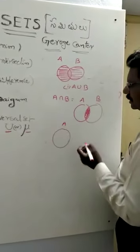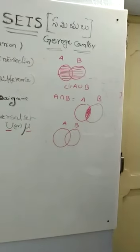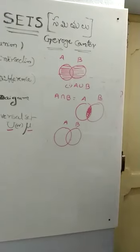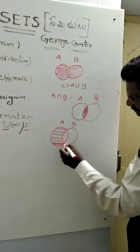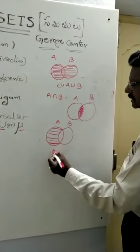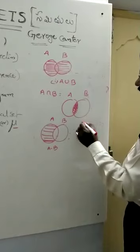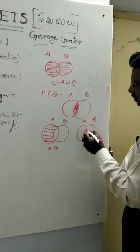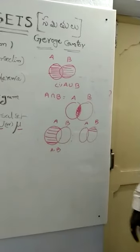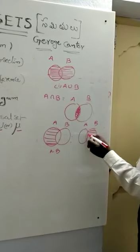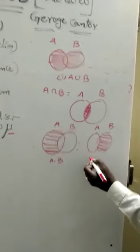Next, A minus B. This is called A, this is called B. A minus B means the remaining part of A only. This is called A minus B. Suppose B minus A, you have to write the remaining part of B. B minus A is this one only, the remaining part of B. This is B minus A.